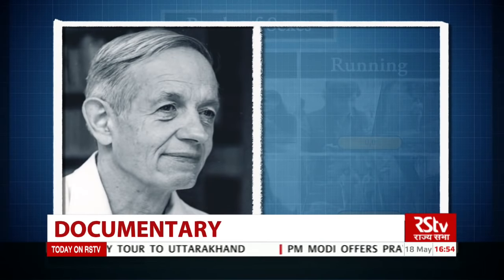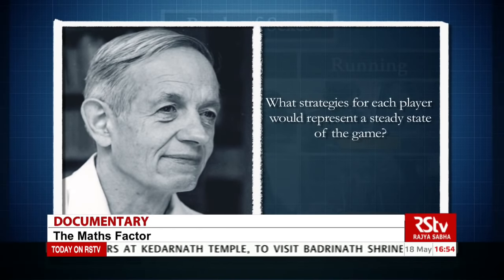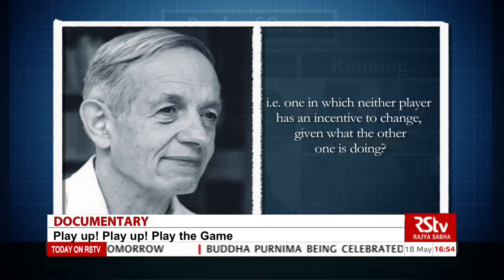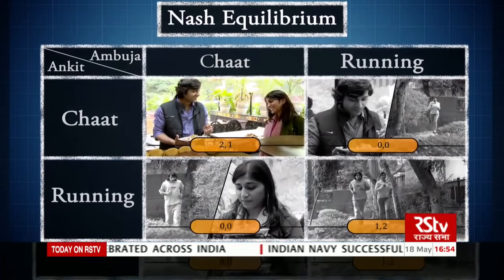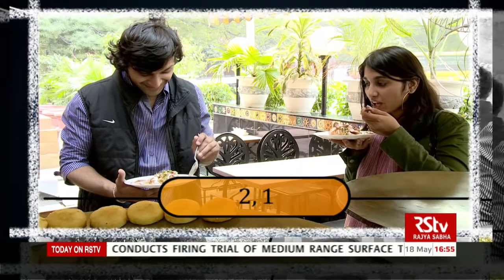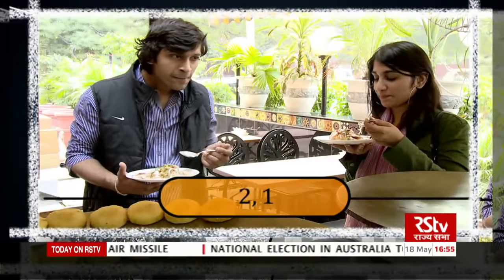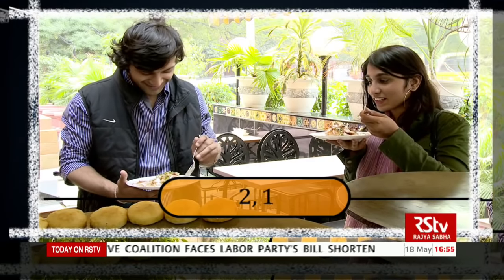What Nash did was beautifully simple. He asked: what strategies for each player would represent a steady state of the game — one in which neither player has an incentive to change, given what the other is doing? Let's look at the option where both players have chosen to eat chaat. If Ankit sticks to eating chaat, then Ambuja would rather eat with him than go for a run alone. And if Ambuja is eating chaat, Ankit clearly doesn't want to run alone. So neither will move, presuming the other sticks to their choice. This is a Nash equilibrium.